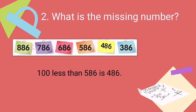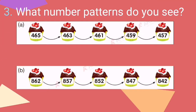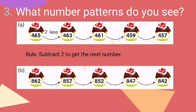486. So 100 less than 586 is 486, and then the last number is 386. Now for example three, letter A: the rule is subtract 2 to get the next number. So 465 minus 2 is 463, then subtract 2 gives 461, then 459, and then the last number is 457.